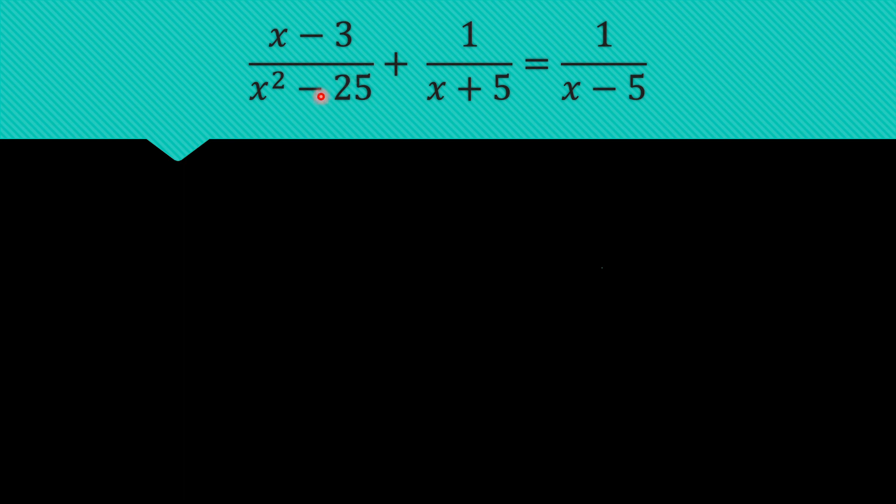So what we can do here is to try to get rid of the denominator by multiplying both sides with the least common denominator. And if we look closely, the least common denominator would be x squared minus 25.